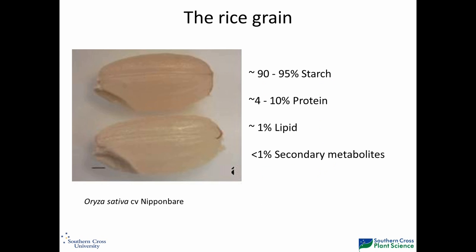Moving to the work we've been engaging in the context of protein — the rice grain is primarily starch, with around 5% to 10% protein, around 1% lipids, which Ben will talk about, and secondary metabolites which, although very small, are also very important in terms of the impact they have on quality.